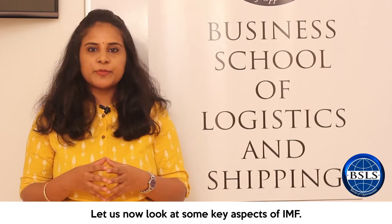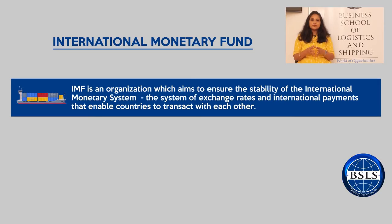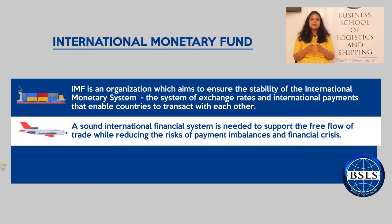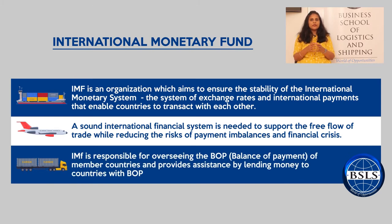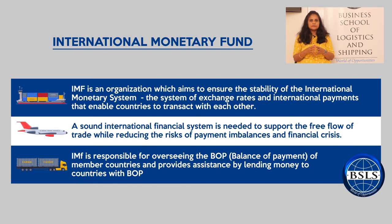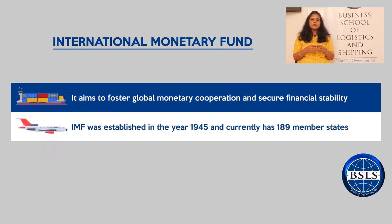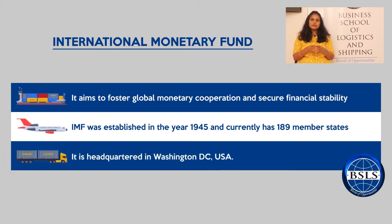IMF is an organisation which aims to ensure the stability of the international monetary system — the system of exchange rates and international payments that enable countries to transact with each other. A sound international financial system is needed to support the free flow of trade and to reduce the risks of payment imbalances and financial crisis. IMF is responsible for overseeing the balance of payments of member countries and providing assistance by funding money to countries with BOP difficulties. It aims to foster global monetary cooperation and secure financial stability. IMF was established in 1945 and currently has 189 member states, headquartered in Washington DC, USA.